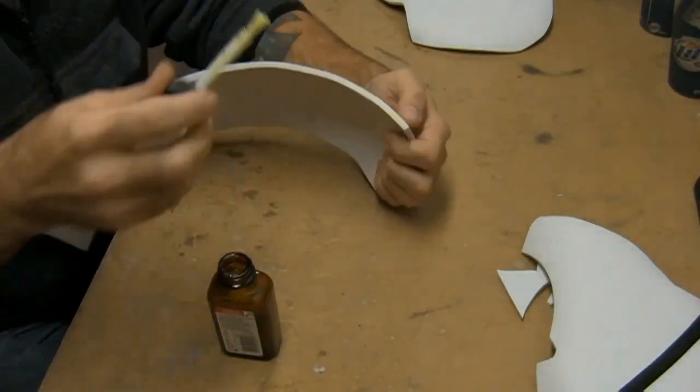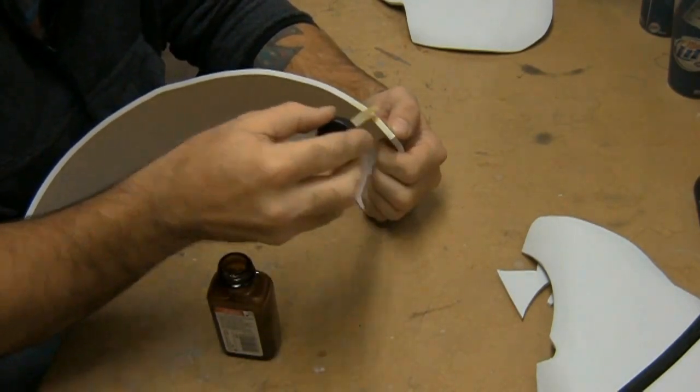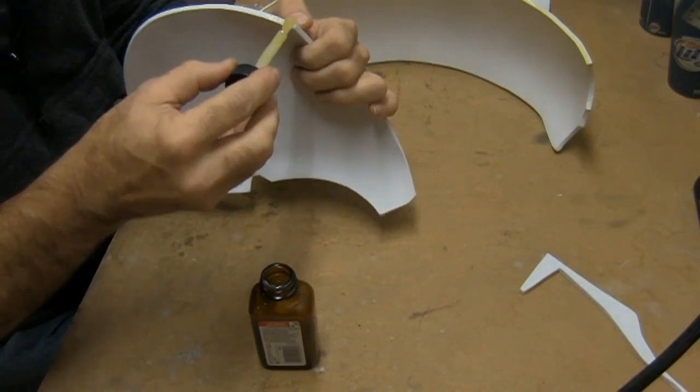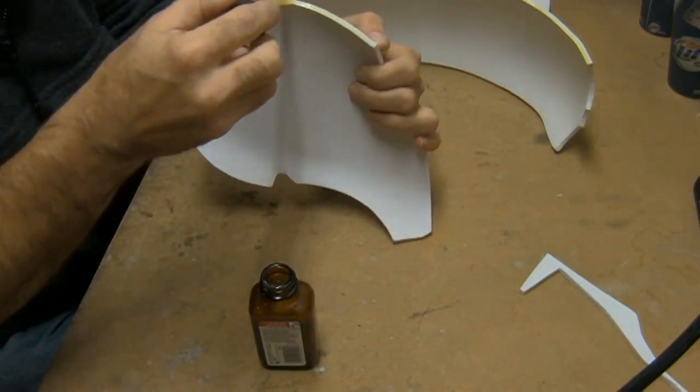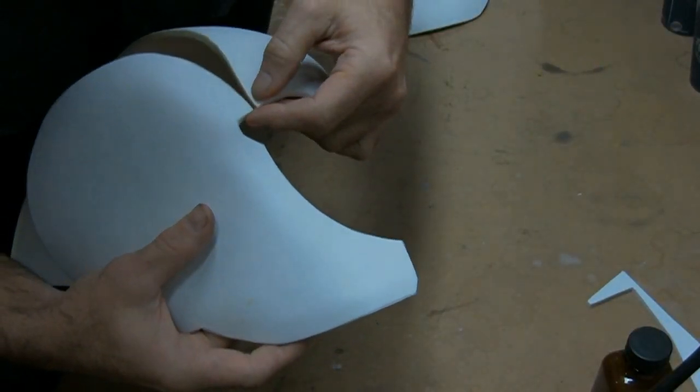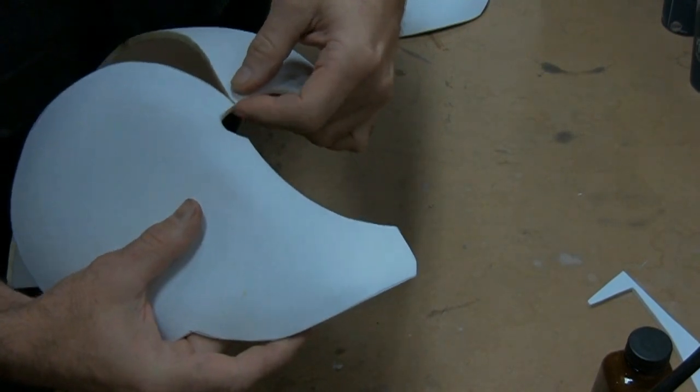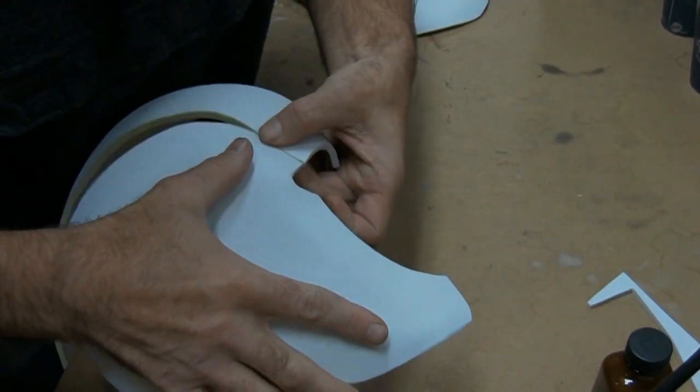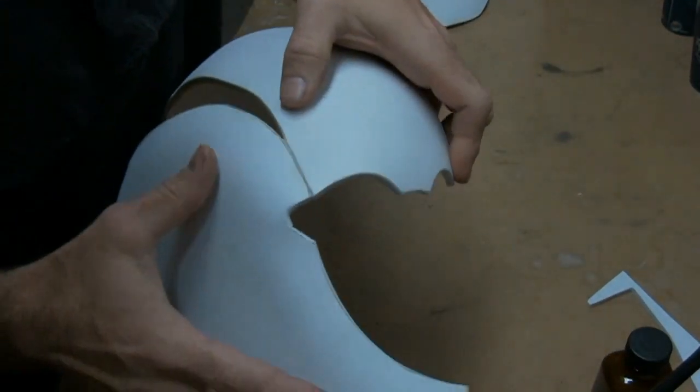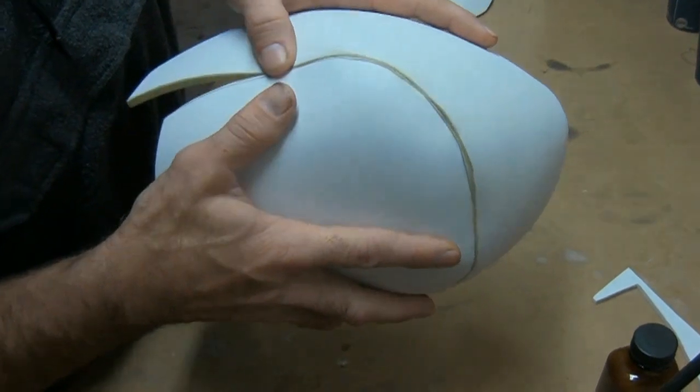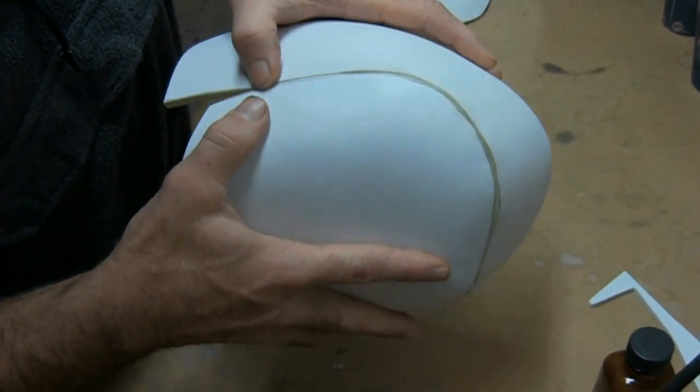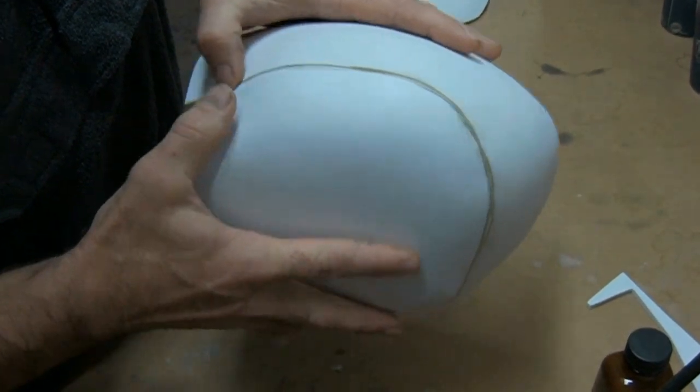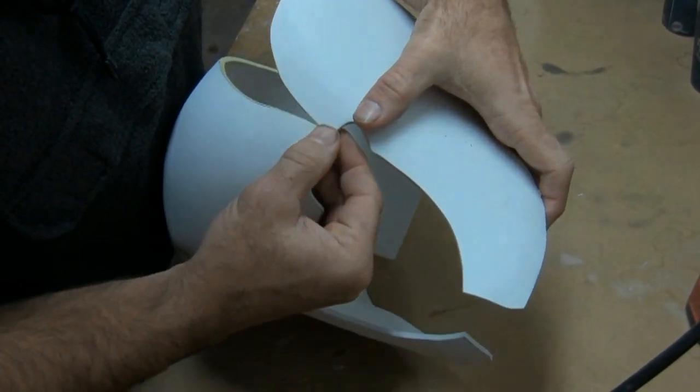Apply your contact cement to one side of the top of the helmet. Go ahead and cover the entire edge. Then apply your cement to the edge of the side of the helmet. Once your edges are covered, let the glue set for about five minutes. Start your assembly at the top of the eye socket. Line your two pieces up and press them together. Try to keep your pieces flush on the outside edge of the helmet. And work your way from the front to the back of the helmet. Then repeat the process for the second side.